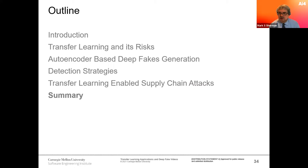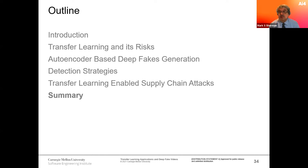To summarize: we've described potential problems that have already occurred, explained how transfer learning works as a mechanism through which problems can be introduced, looked at what autoencoder-based deepfake generation looks like and how it might be inserted via the supply chain, and reviewed the state of detection — still not quite adequate but an area we need to keep working on. We have a lot of research in this area — please contact us and we'd be happy to share more. Thank you.